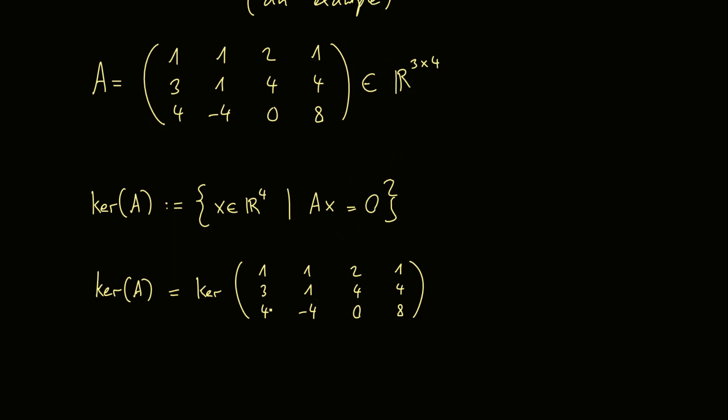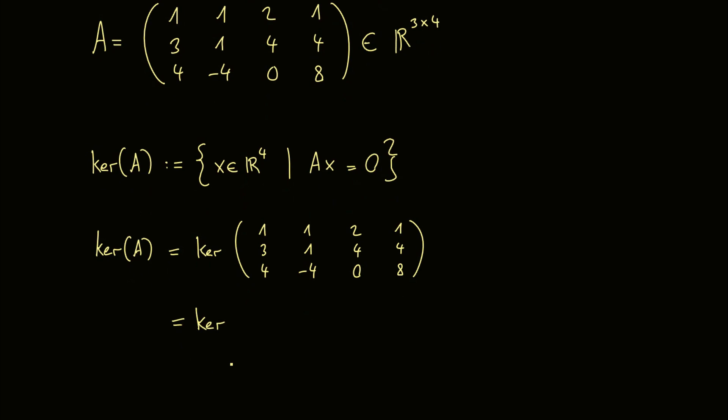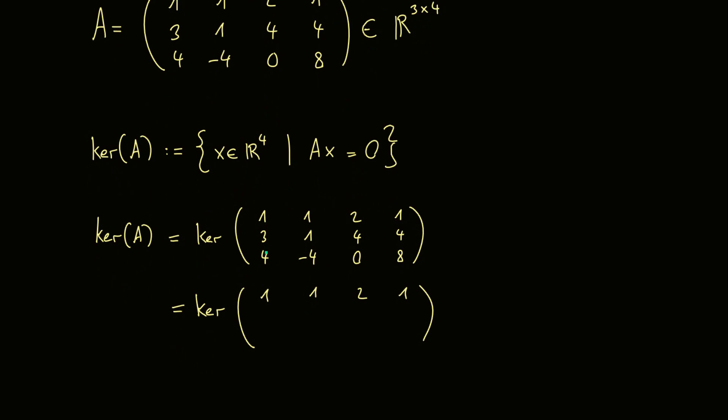We want to change the second and the third row in such a way that we create zeros here in the first column. So meaning we have to add on the second row a multiplier of the first row. So minus 3 times the first row gives us what we want here. So 0 here, then we have minus 2 and minus 2 and 1. Then we do the same for the third row.